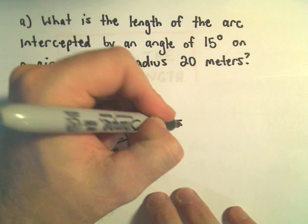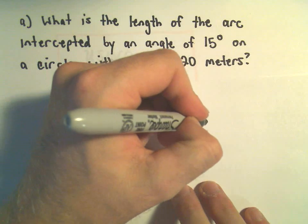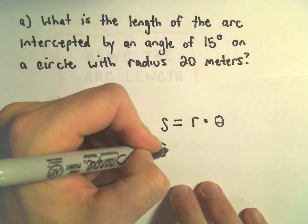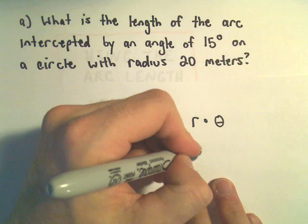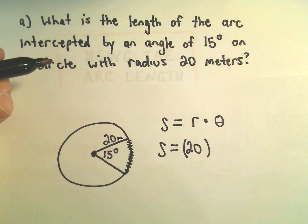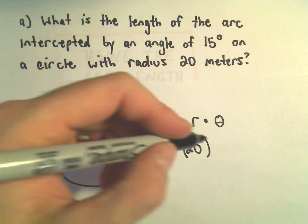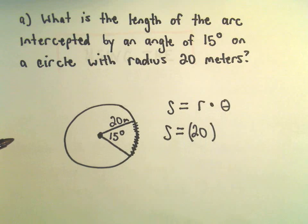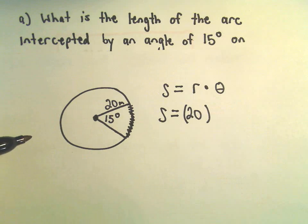So I know that S is going to be R times theta. Well, my R value, that's the radius, which we know is 20, and again, we don't want to plug in 15, we've got to convert 15 degrees into radians for our theta.